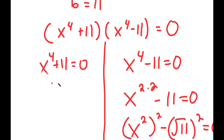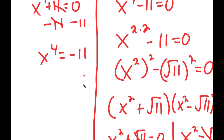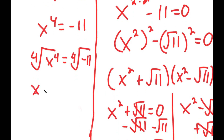Going back to the other equation, x to the power of 4 plus 11 equals 0. I subtract 11 on both sides and get x to the power of 4 equals negative 11. Now I can take the fourth root on both sides, so I get x equals the fourth root of negative 11, and this is positive or negative.